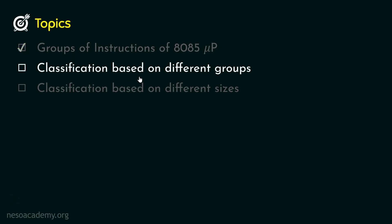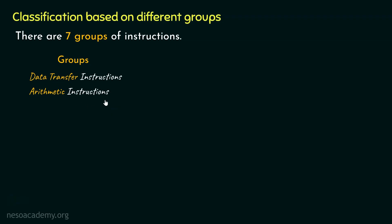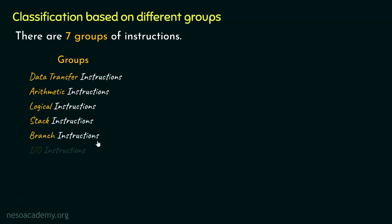Let's now learn about the classification based on different groups. In the case of the 8085 there are seven groups of instructions. The first three — which we have already seen — are: data transfer instructions, arithmetic instructions, and logical instructions. Apart from these there are four more: stack instructions, branch instructions, input/output instructions, and interrupt instructions. You might wonder why machine control instructions are not listed separately.